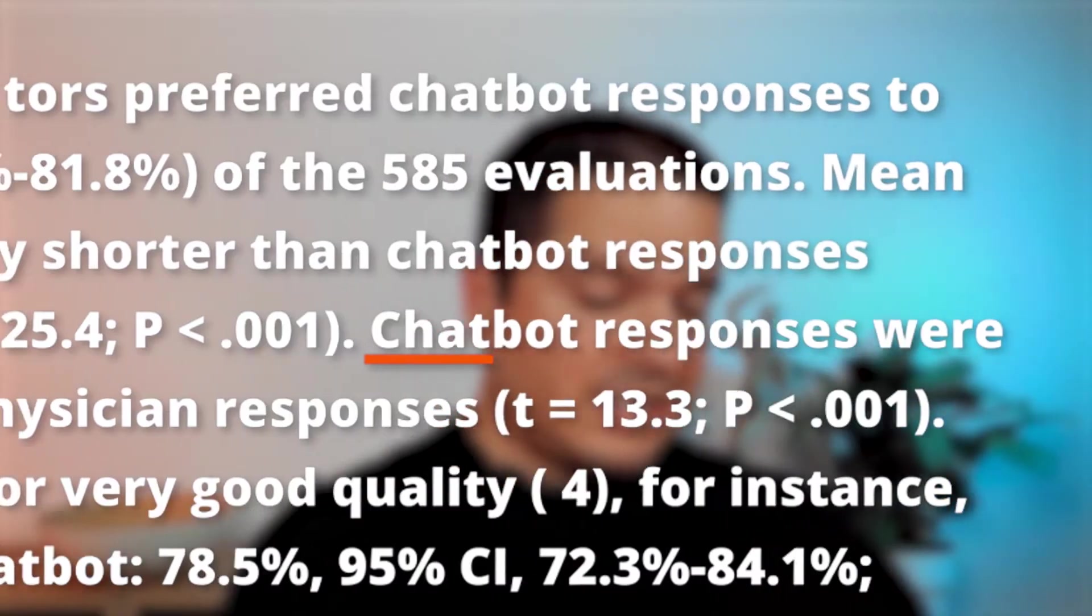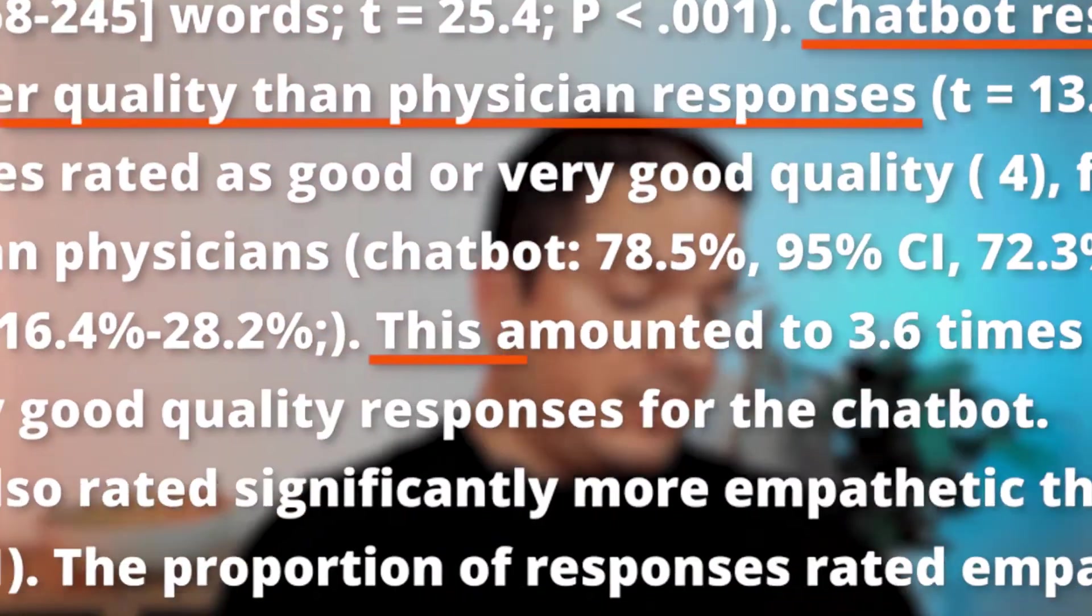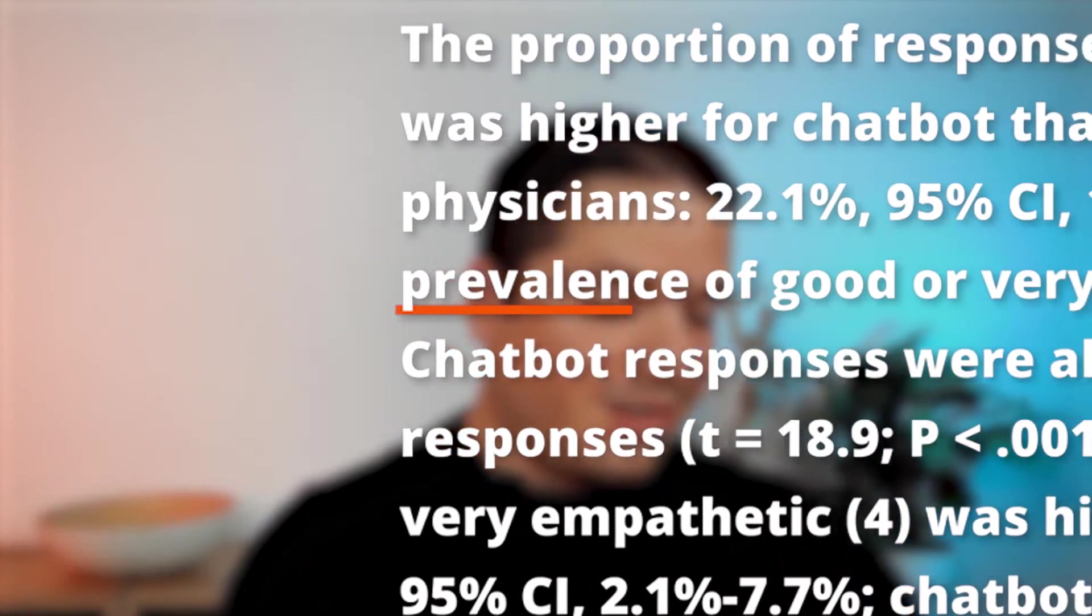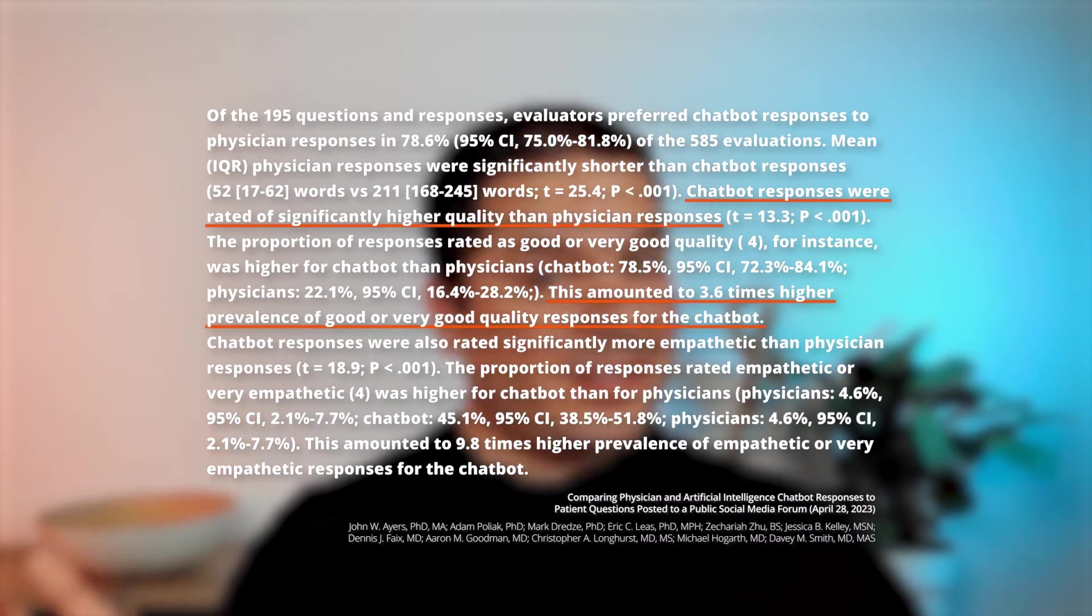And there is actually a nice outcome from a recent research, I will leave the link in the description, where a research group compared the answers given to certain questions by a physician and by ChatGPT. And, in the end, ChatGPT responses were rated as better answers, more accurate than the quality of physicians. It says Chatbot responses were rated of significantly higher quality than physician responses, and actually, this was 3.6 times higher prevalence of good or very good quality responses for the Chatbot. So, the Chatbot was 3.6 times more accurate than a human doctor.